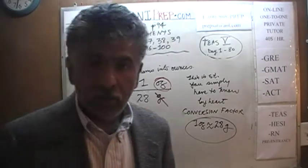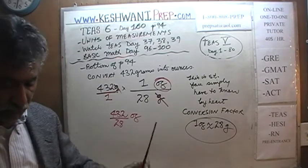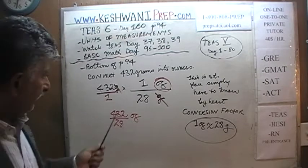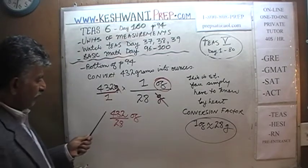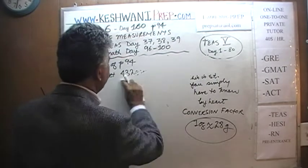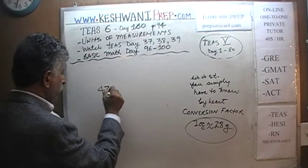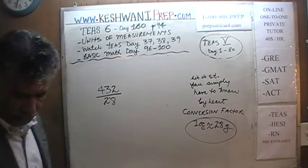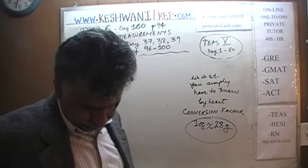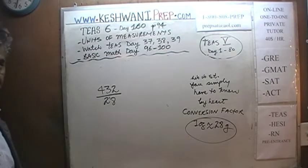I'm going to show you how to do it by hand. We need room so I'm going to erase all of this. We're simply going to divide 432 by 28. Let's do 432 divided by 28 as fast as we can. Notice that 28 is an even number and 432 is an even number, so let's divide top and bottom by 2.